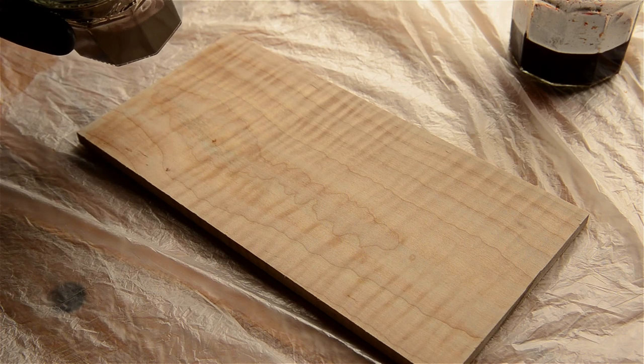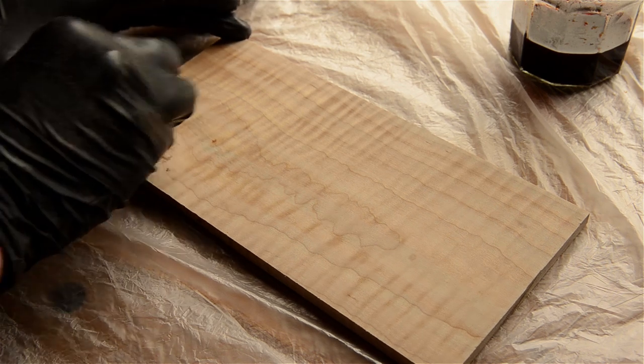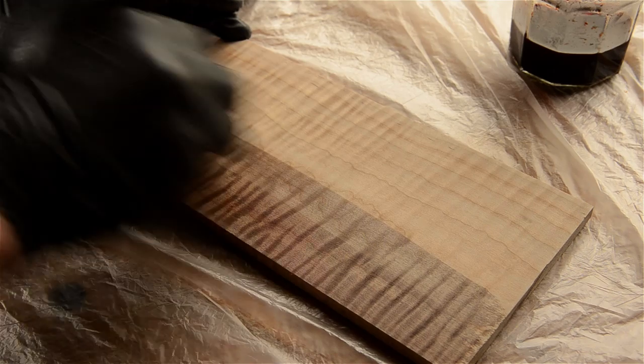I use a balled-up rag cut from an old t-shirt. Then I apply the dark brown dye first. It really doesn't matter how you apply it since I'll be sanding it off.